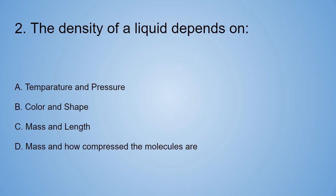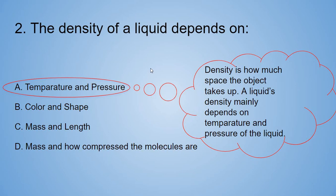I don't know this answer. Mr. Answer, come on out! Number A. Temperature and pressure. Density is how much space the object takes up. A liquid's density mainly depends on temperature and pressure of the liquid. Okay, that's nice to know! I learned something new today!